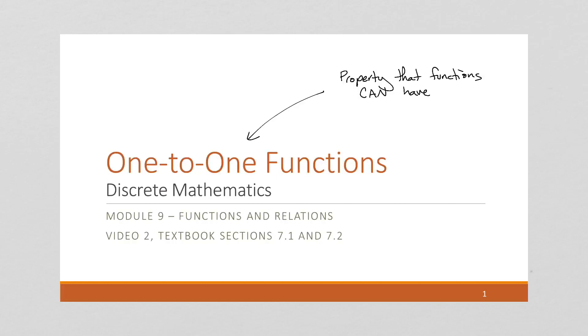We saw in the previous video two required properties where something isn't a function unless it has them. Every element in x has to match to some element in y, which we wrote: for all little x in x, there exists a y in y, such that xy is an element of the function. That's our first property.